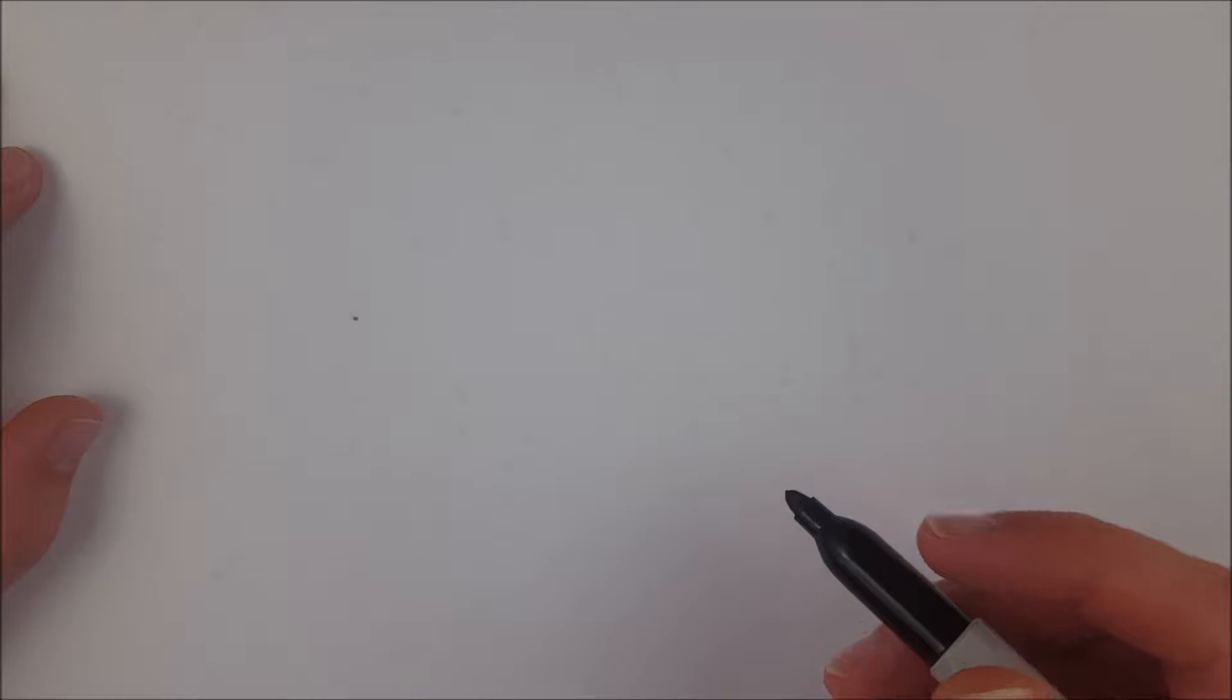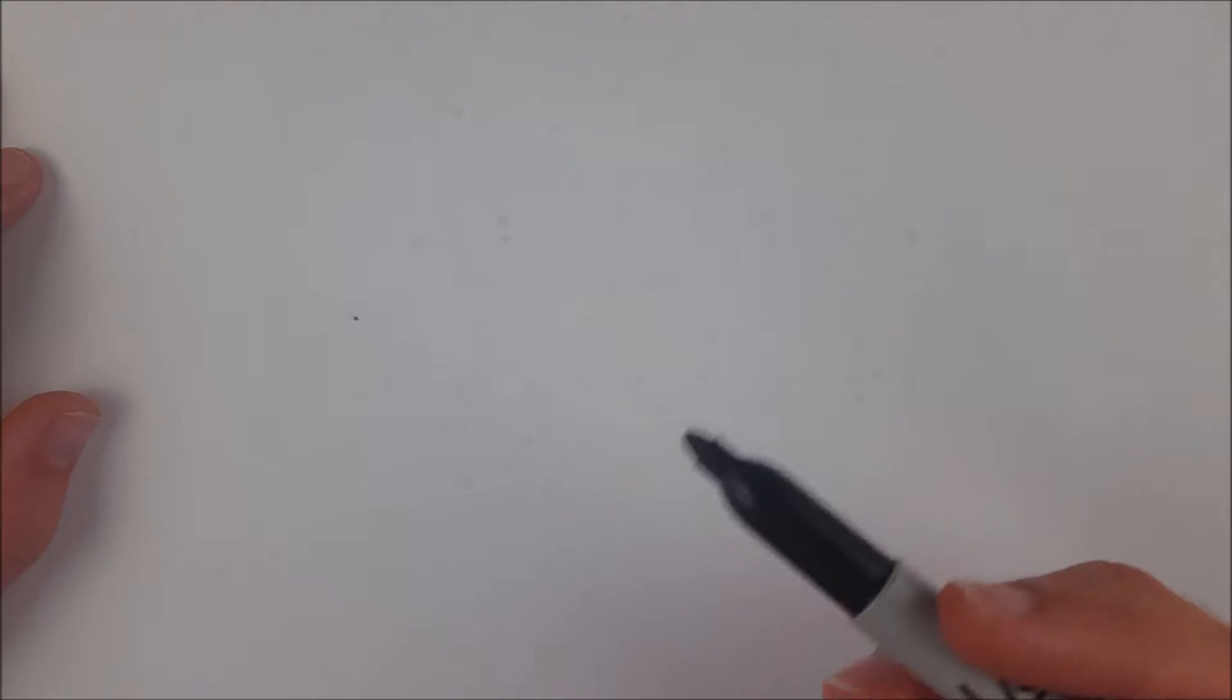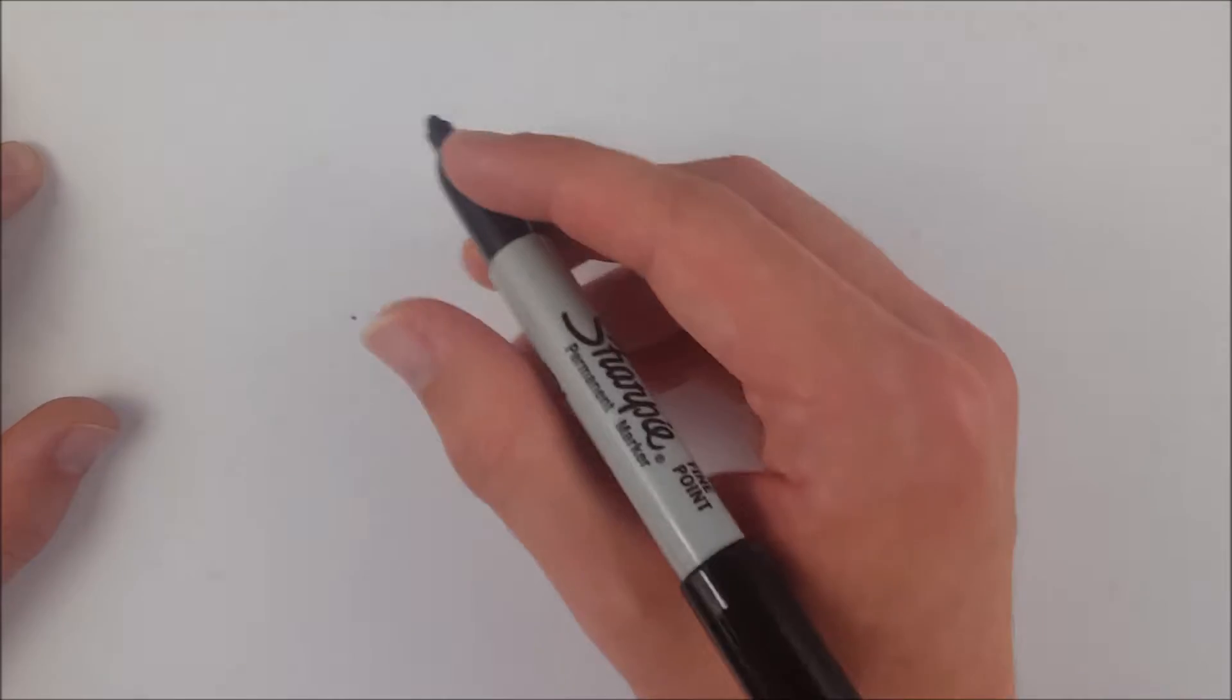In today's video we are proving that if you have a radius of a circle that is perpendicular to a chord of that circle, then it must also bisect that chord.